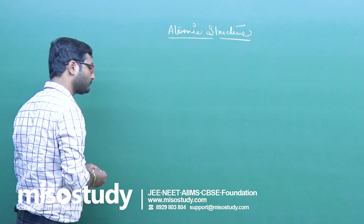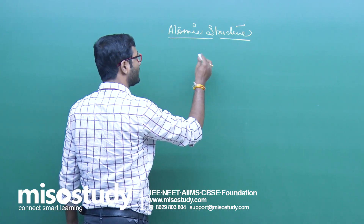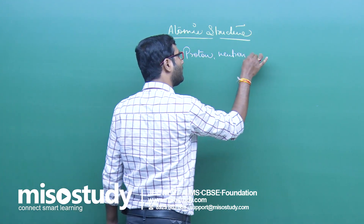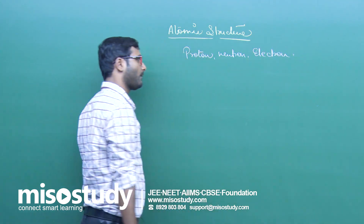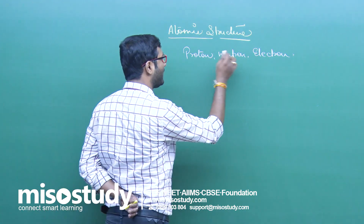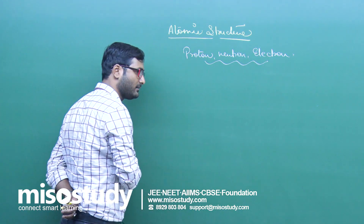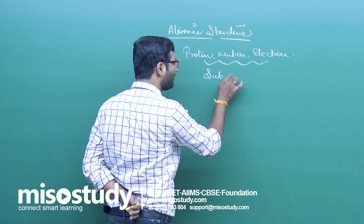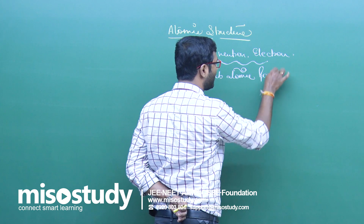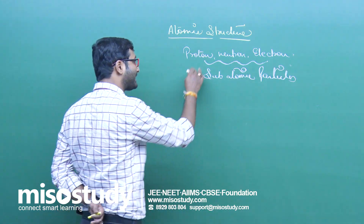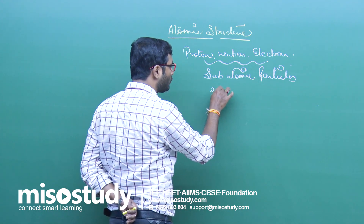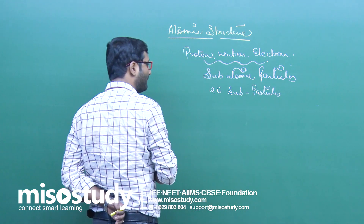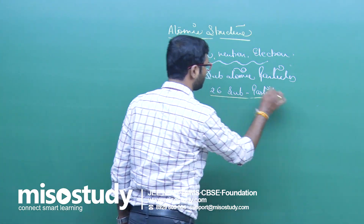The structure of an atom. After Dalton's atomic theory, or after the discovery of proton, neutron, electron, and many subatomic particles, we now assume that atoms can be divided further and these particles are called subatomic particles. Apart from neutron, proton, and electron, we have around 26 subatomic particles and it is still counting — like electron, meson, pi meson, and so on.